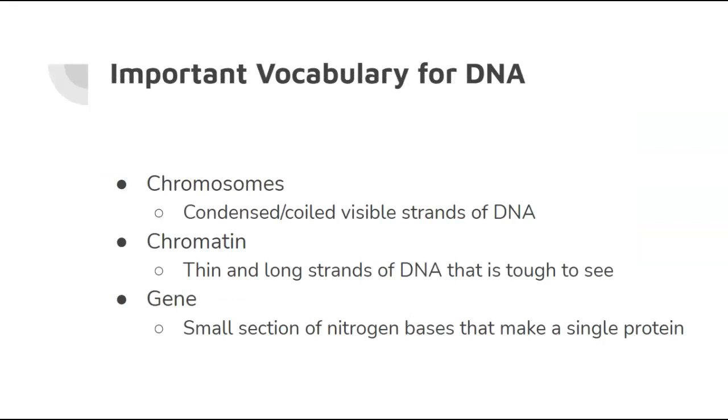Now, the vocab in this, there's not a lot. We've talked about some of this before, but I'm just kind of bringing it back to your attention that you're going to see these terms throughout this unit and the next unit. And so, chromosomes are condensed, coiled, visible strands of DNA. Chromatin is that thin and long strands of DNA. You can't really see it. It's really only in interphase. And then a gene.